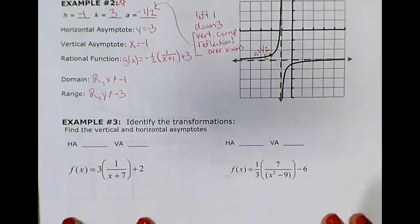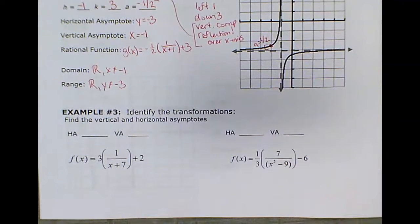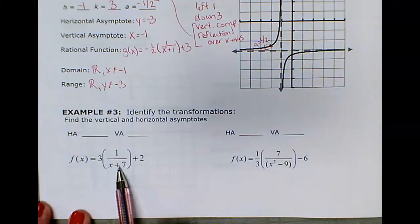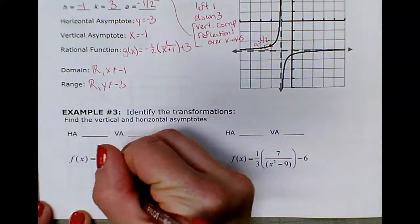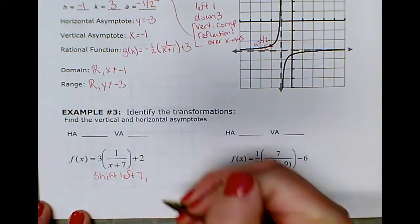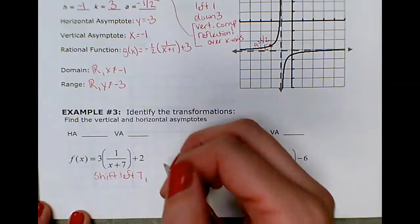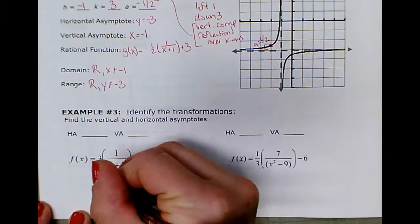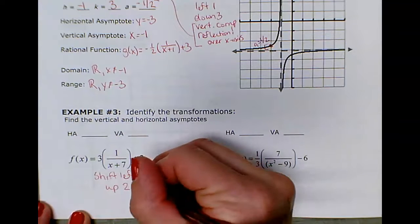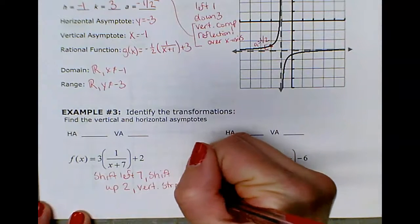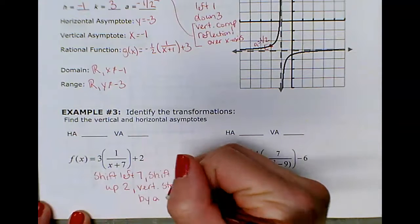In Example 3, we identify transformations and find asymptotes. The equation has three numbers creating transformations. The plus 7 in the denominator means shift left 7; the plus 2 on the outside means shift up 2; and the 3 as the a value means a vertical stretch by a factor of 3.